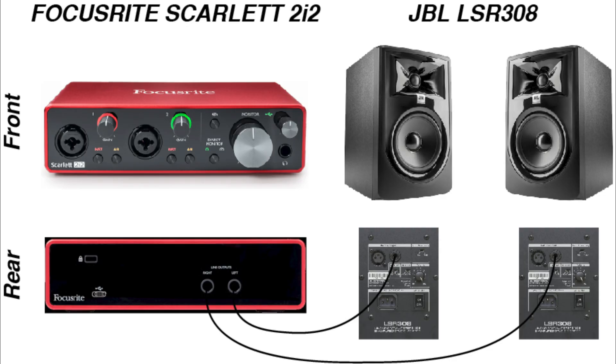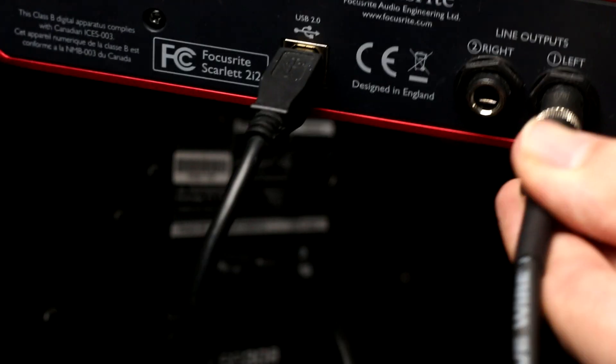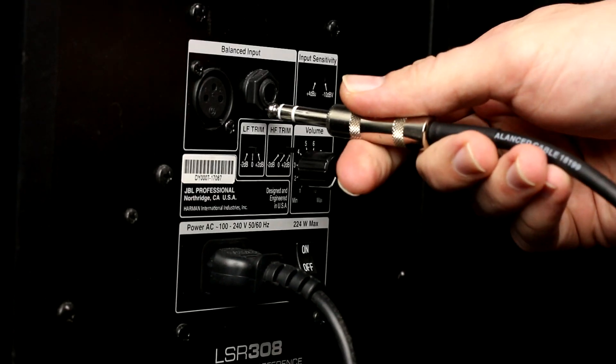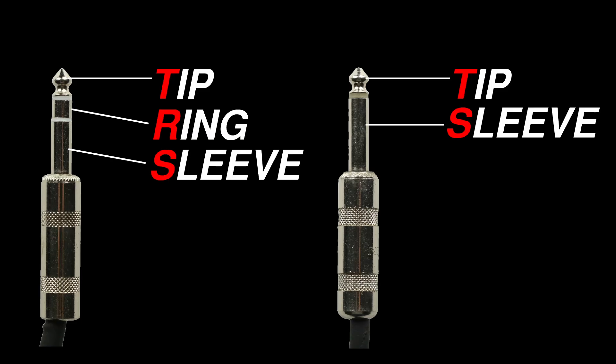If your interface and studio monitors both have quarter-inch TRS connectors, you can use a quarter-inch TRS cable to connect them. If you need an adapter from XLR to quarter-inch TRS or the other way around, you can find a link to that adapter in the description below. It's okay to connect your interface to your speakers with a quarter-inch TS instrument cable if that's all you've got, but it will be an unbalanced connection which might lead to some unwanted noise. Don't worry too much because it's not a big problem at short distances.